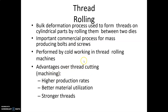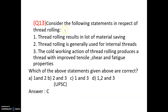Consider the following statements about thread rolling: (1) Thread rolling results in a lot of material saving — correct. (2) Thread rolling is generally used for internal threads — incorrect. (3) The cold working action of thread rolling produces threads with improved tensile, shear, and fatigue properties — correct, as cold working increases hardness and strength. So statements 1 and 3 are correct, 2 is wrong. Option C is correct.